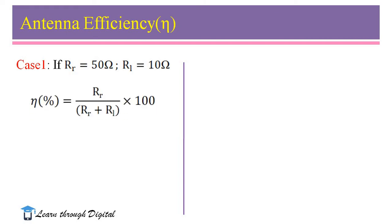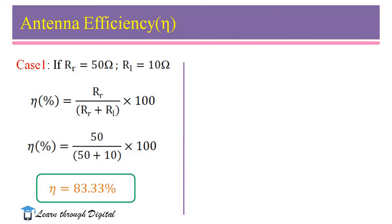We calculate η with the help of this simple formula: RR/(RR + RL). Substitute the values: 50/60 × 100. Therefore, η = 83.33%.